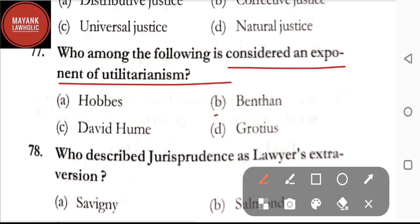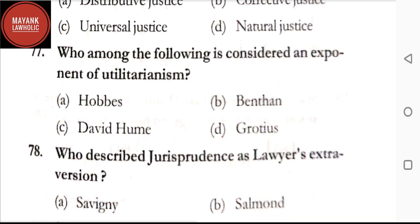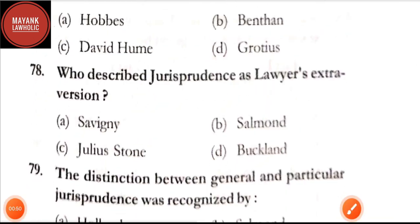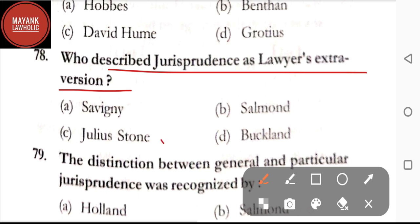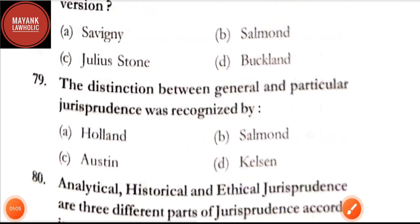Question number 77: who among the following is considered an exponent of utilitarianism — option A: Hobbes; option B: Bentham; option C: David Hume; option D: Grotius. The correct answer is option B, Bentham. Question number 78: who described jurisprudence as 'lawyer's extroversion' — option A: Savigny; option B: Salmond; option C: Julius Stone; option D: Buckland. The correct answer is option C, Julius Stone.